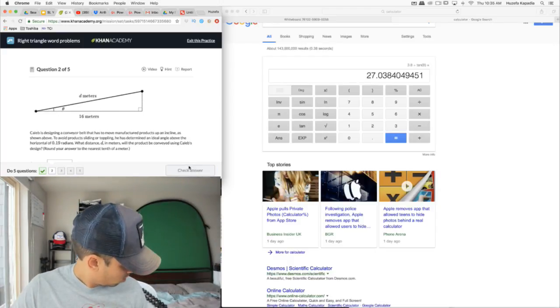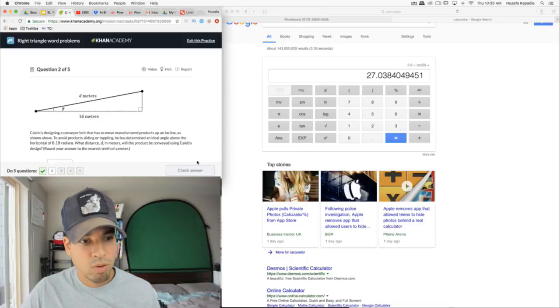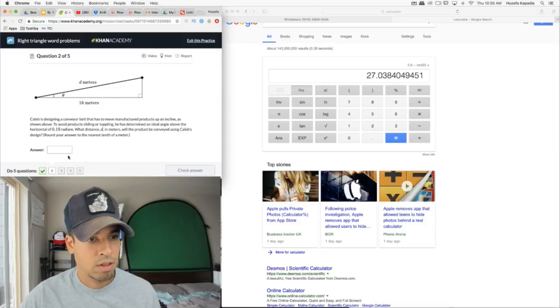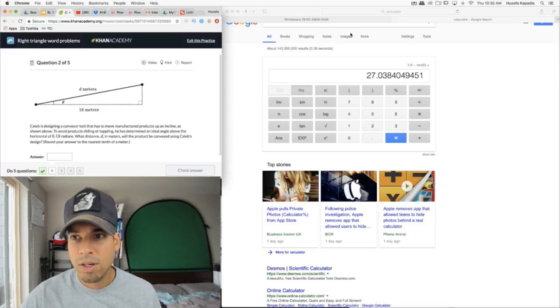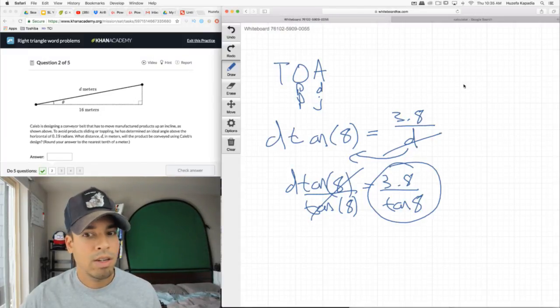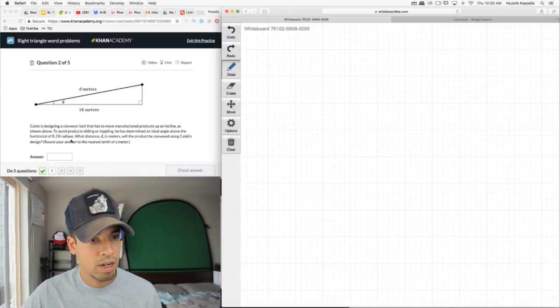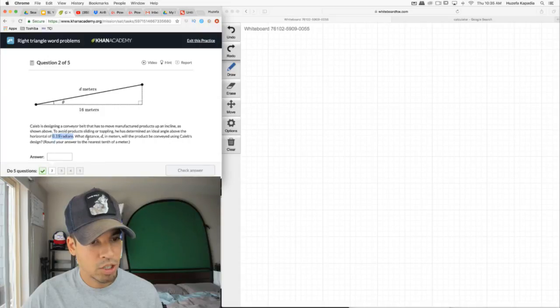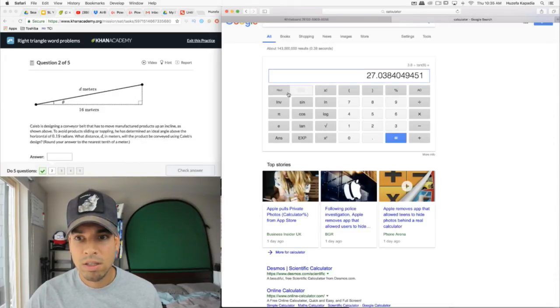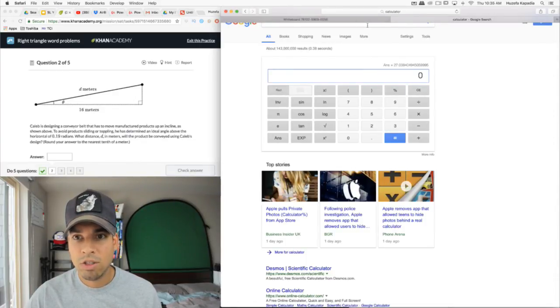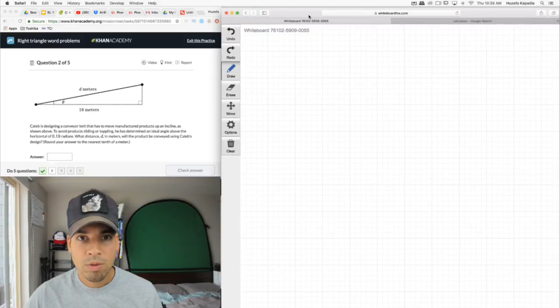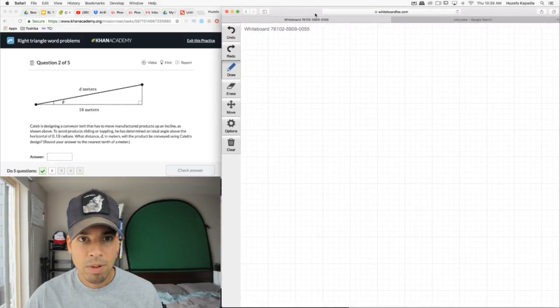Excellent. Let's move on to the next question here. It's very similar. Now it's basically the same idea. This angle is 0.19 radians. Now it's in radians, so that means our calculator is going to need to be in radians when we do this calculation.